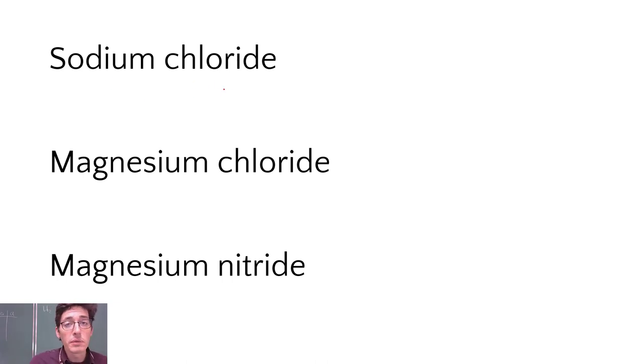So to write formulas for ionic compounds we start by just getting their symbols. So sodium on the periodic table is Na, number 11, and chlorine is Cl, number, what, 35? No, 17. 35 is not chlorine. So I've got sodium and chlorine.